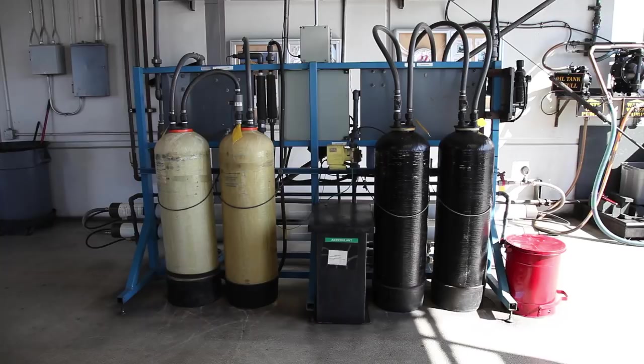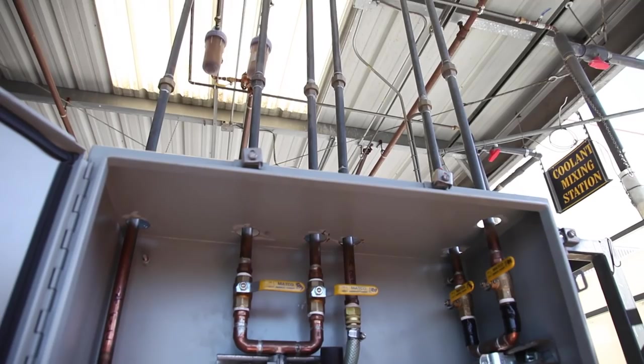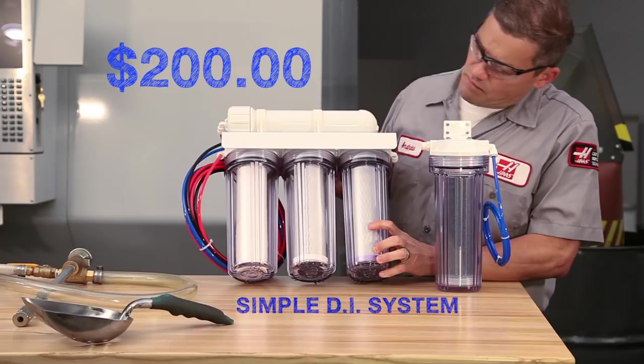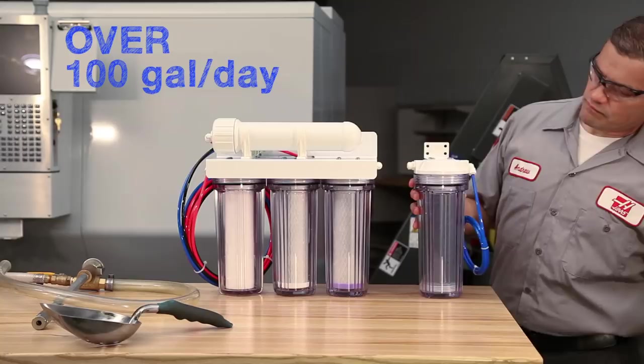Large shops with many machines often have complex installations maintained by water purifying companies. For smaller shops, simple, inexpensive units for a few hundred dollars are usually just fine. These simple systems combine reverse osmosis and deionization and can provide more than a hundred gallons of purified water a day for a cost of five cents or less per gallon.